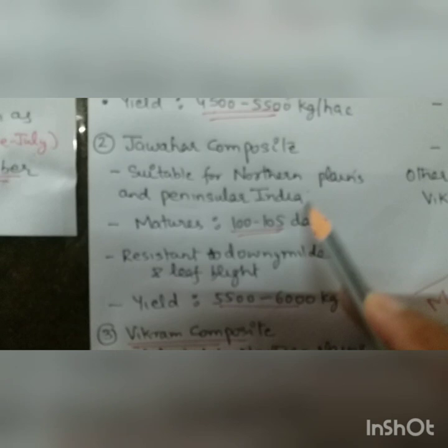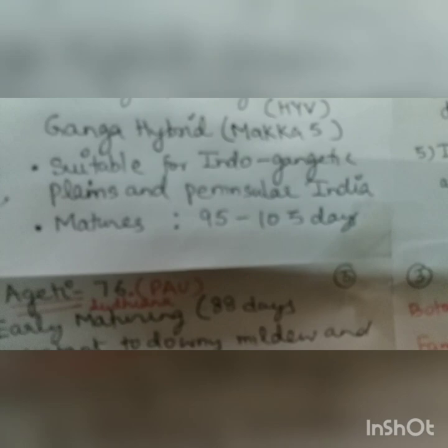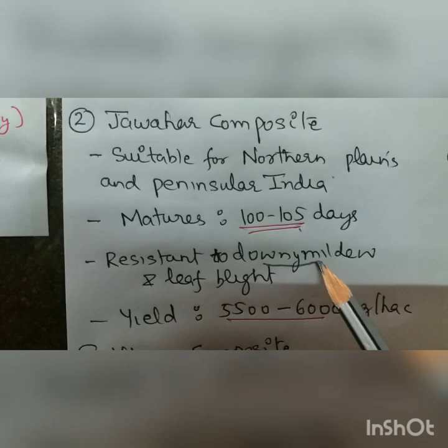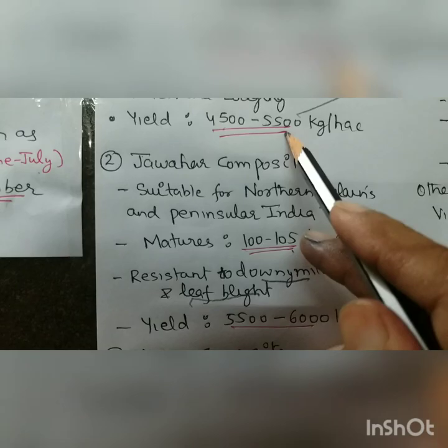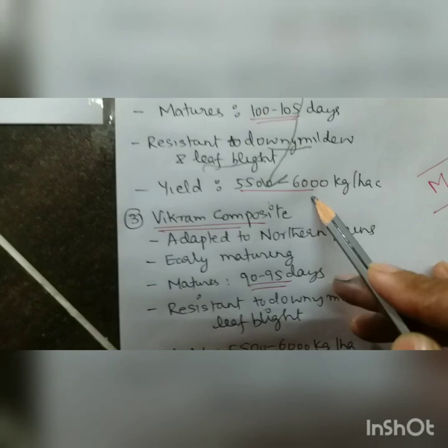Next is Juhar Composite, with the same area — Indo-Gangetic plains — but it takes slightly longer: 100 to 105 days to mature. It is resistant to downy mildew and leaf blight. Yield improves to 55 to 6000 kg per hectare.